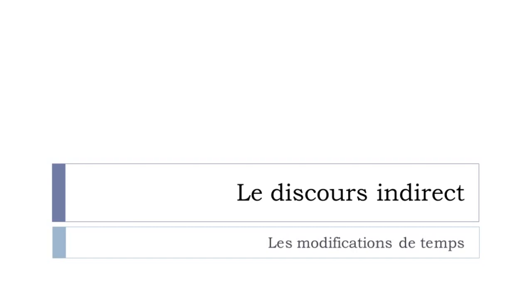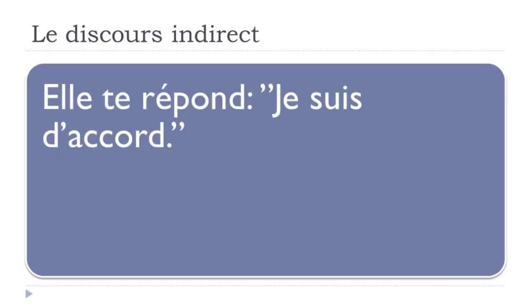Les modifications de temps. So let's start now. I wanted to first show you this simple example. If we've got the sentence 'elle te répond, je suis d'accord' — répondre is 'to answer', 'te' is 'for you', so 'she answers to you'. And 'je suis d'accord' is 'I do agree'.